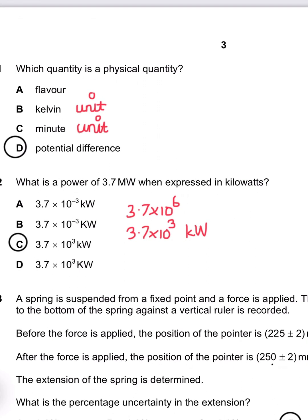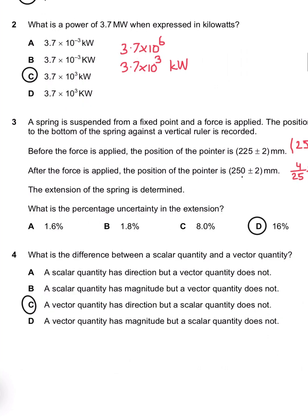Question number 2 says, what is 3.7 megawatts when expressed in kilowatts? C is the appropriate answer.